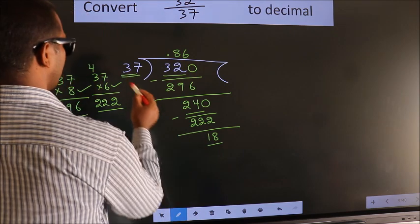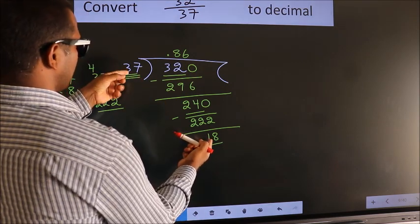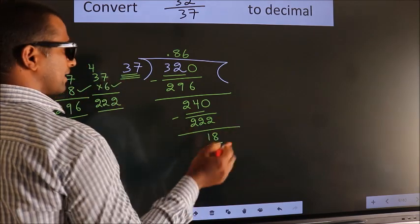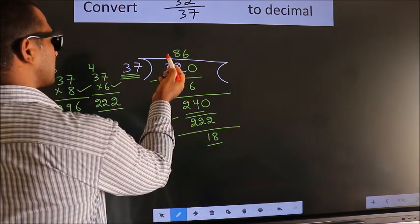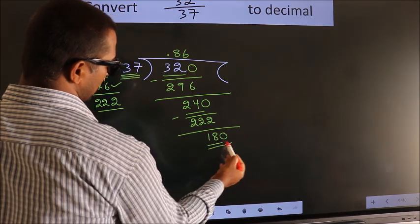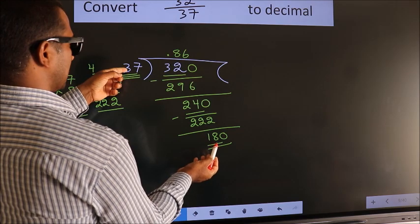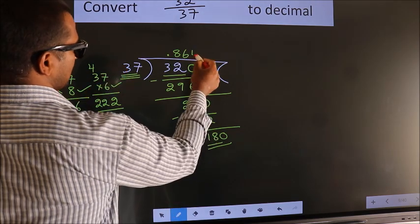Here we have 18, here 37. 18 is smaller than 37, and we already have the decimal, so we can directly take 0. So 180. A number close to 180 in the 37 table is 37 times 4.